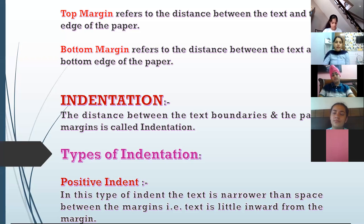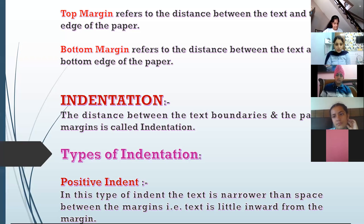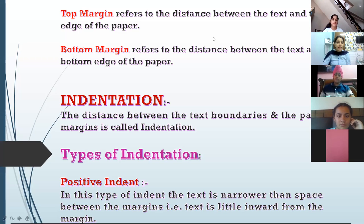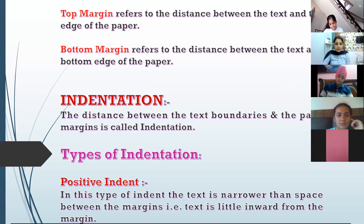So margins are left, top, right, and bottom. Next is indentation. The distance between the text boundaries and the page margins is called indentation. There are three types of indents: positive indent, negative indent, and hanging indent.